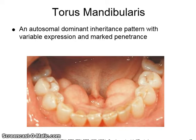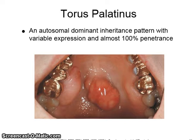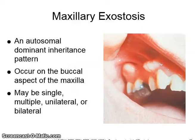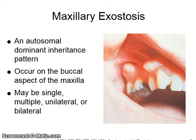Torus mandibularis, or mandibular tori, is an autosomal dominant inheritance pattern with variable expression and marked penetrance. Torus palatinus is an autosomal dominant inheritance pattern with variable expression and almost 100% penetrance. Maxillary exostosis is an autosomal dominant inheritance pattern occurring on the buccal aspect of the alveola, and may be single, multiple, unilateral, or bilateral.